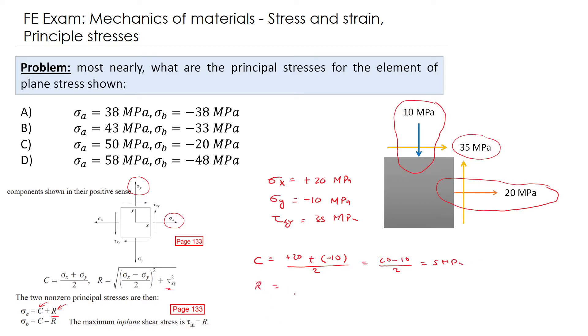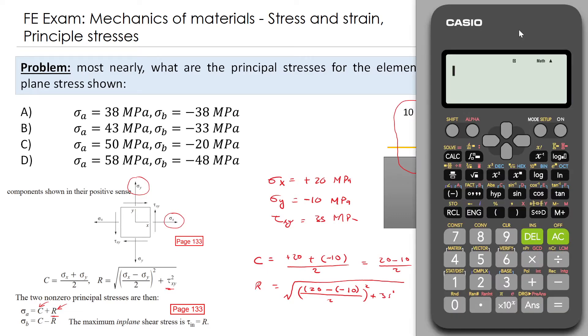For R, we have the square root of sigma x, which is 20, minus sigma y, which is minus 10, divided by 2, everything squared, plus 35 squared. Now, 20 minus minus 10, this is 30. 30 divided by 2, this is 15. So we have the square root of 15 squared, plus 35 squared, which is 38.07.